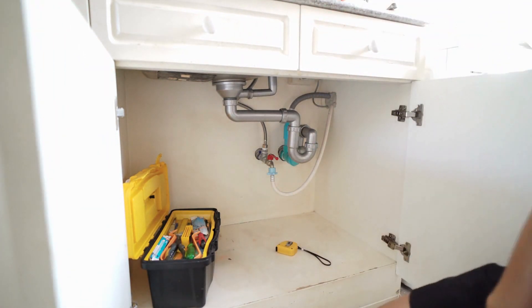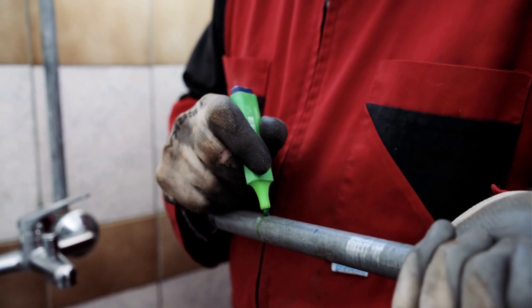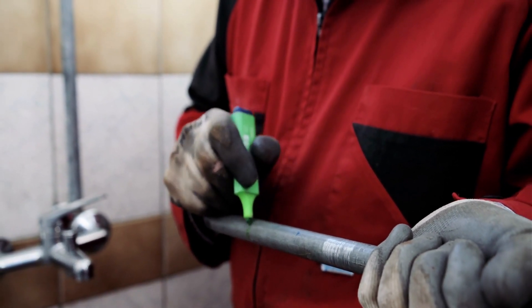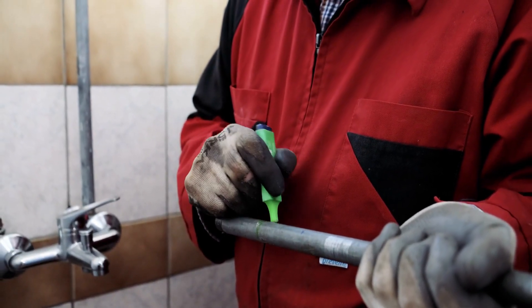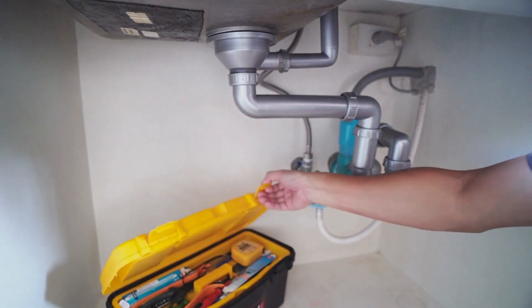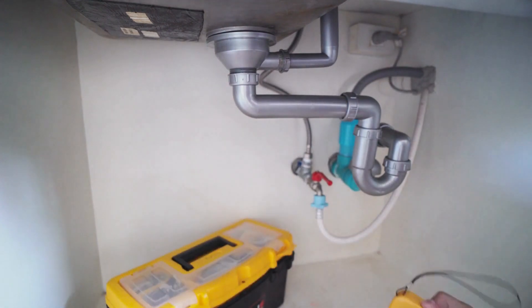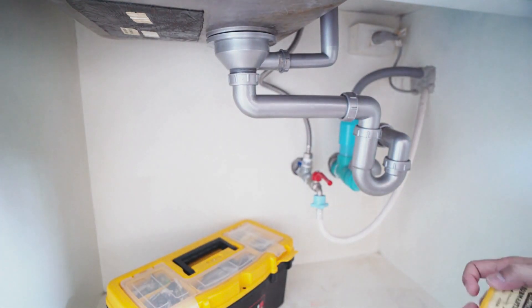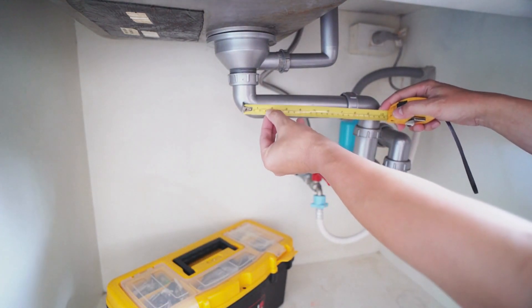Now let's move on to the practical steps of measuring pipe size. Step 1, check the pipe for a number. Before taking any measurements, inspect the pipe for any labeling. Certain pipes, like PVC, CPVC, or PEX pipes, often have the size information printed on the side. This simple step can save you a lot of effort.